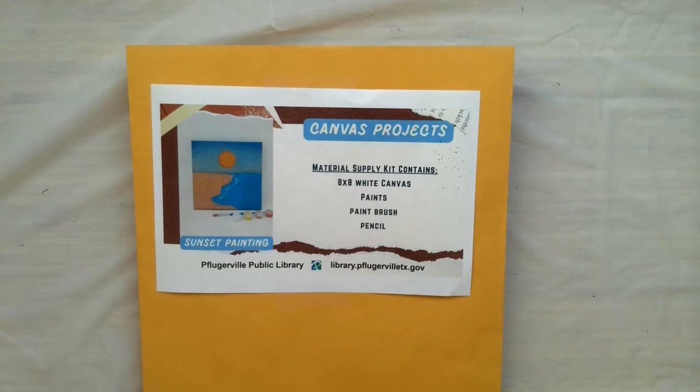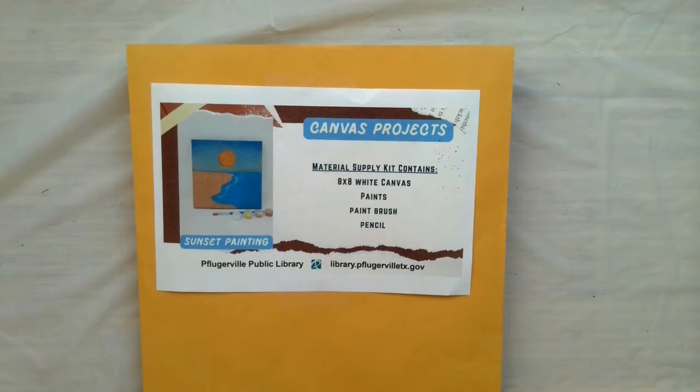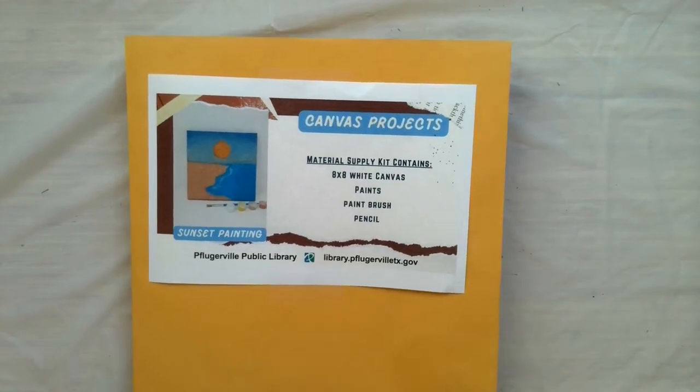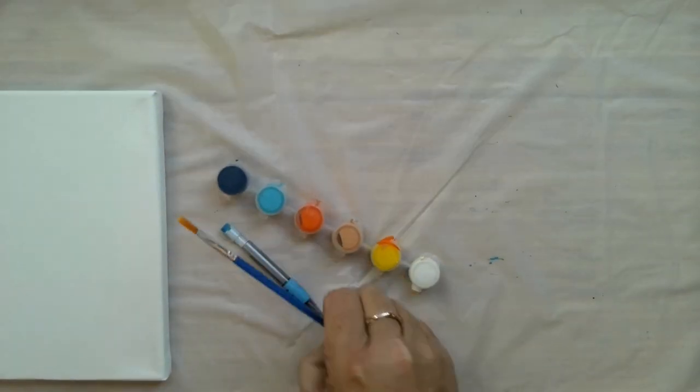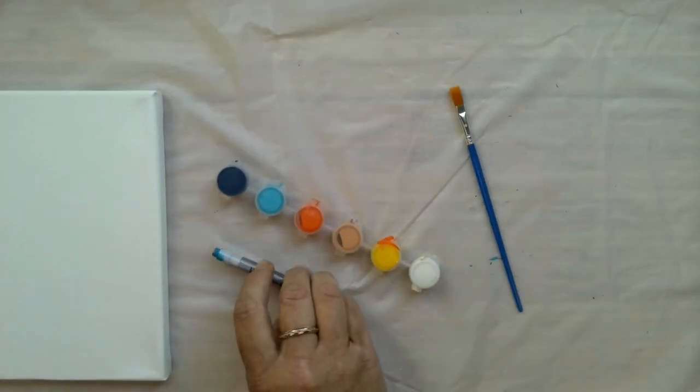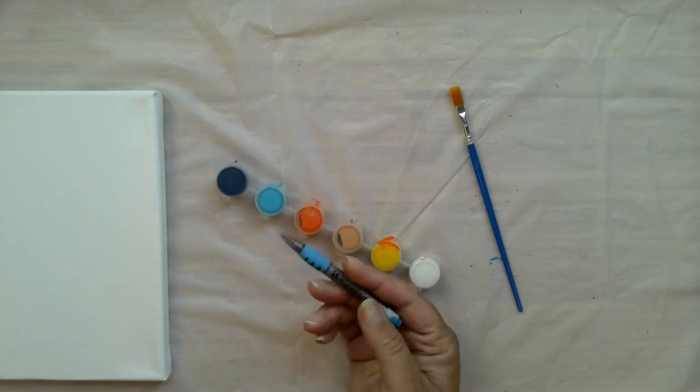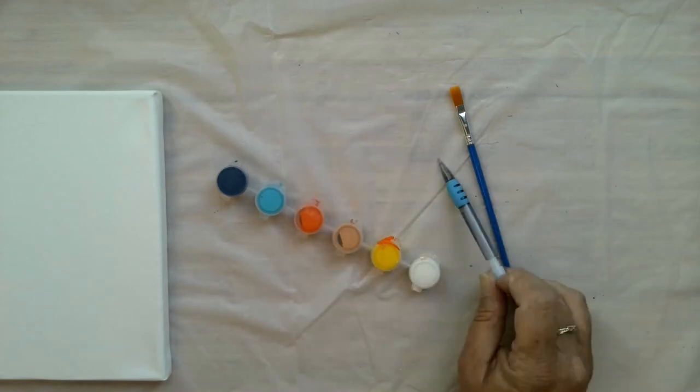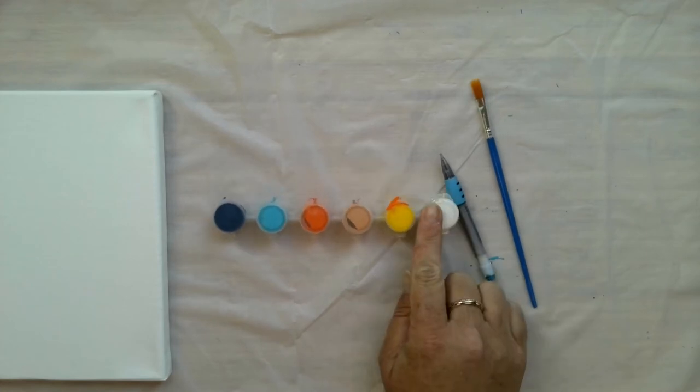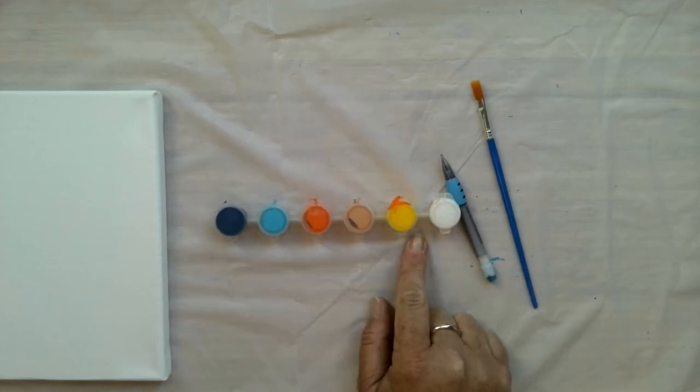Let's start with a look at the supplies being provided. In our 9x12 Manila envelope here, we are providing an 8x8 canvas. You have a flat brush, as well as a mechanical pencil. We upped the number of kits, so a few folks have these older giveaway mechanical pencils. The rest have just some basic ones from the Dollar Tree.